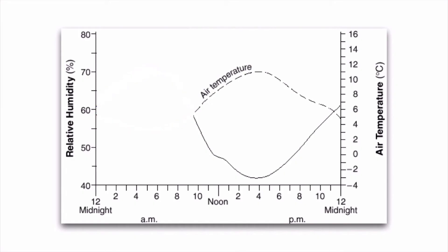Later on in the day, as air temperature increases, relative humidity goes down. The higher the air temperature, the more the air is expanding and rising, leaving room for more water vapor to be held. Because the air has a greater capacity, the relative humidity goes down.